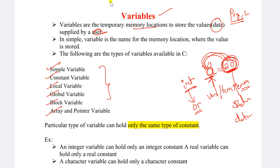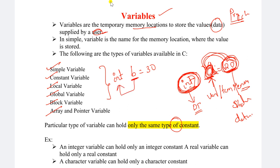A particular type of variable can hold only the same type of constant. For example, integer a is equal to 20 — it can hold only integer values. Below that, we can store only integers. An integer variable can hold only an integer constant. A real variable can hold only a real constant — very, very important.